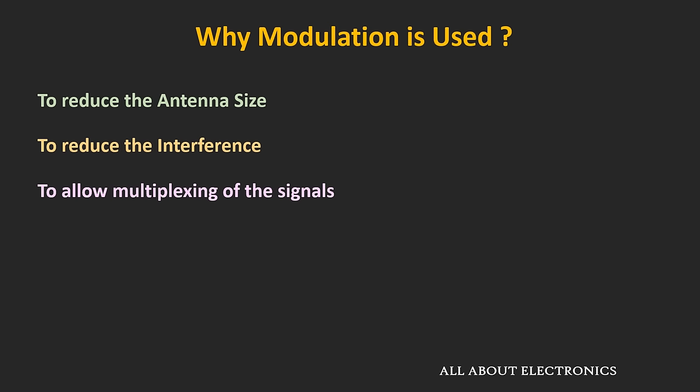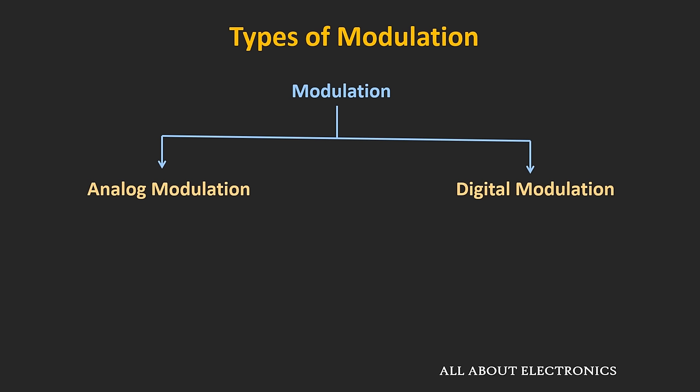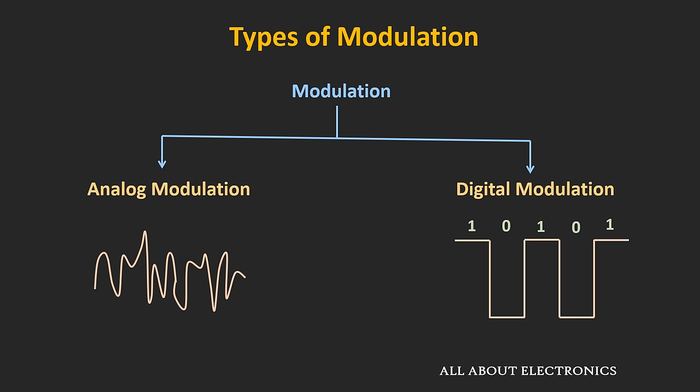These are some of the important aspects of why modulation is used in communication. Now let's see the different types of modulation. Broadly, there are two types: analog modulation and digital modulation. If the message signal is analog, it is known as analog modulation. If the message signal is in digital form — in terms of 1s and 0s — it is known as digital modulation.